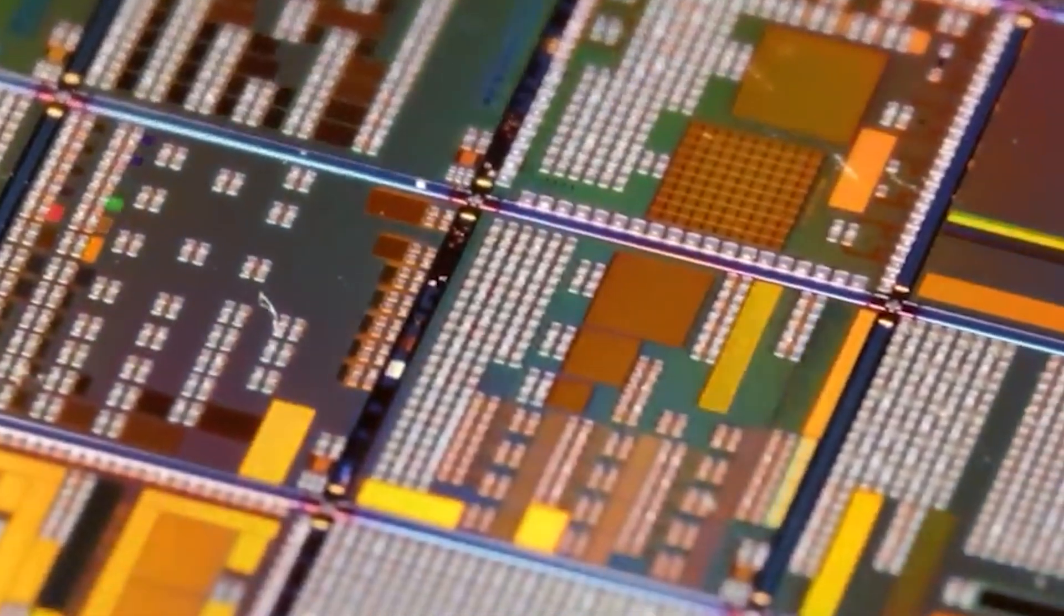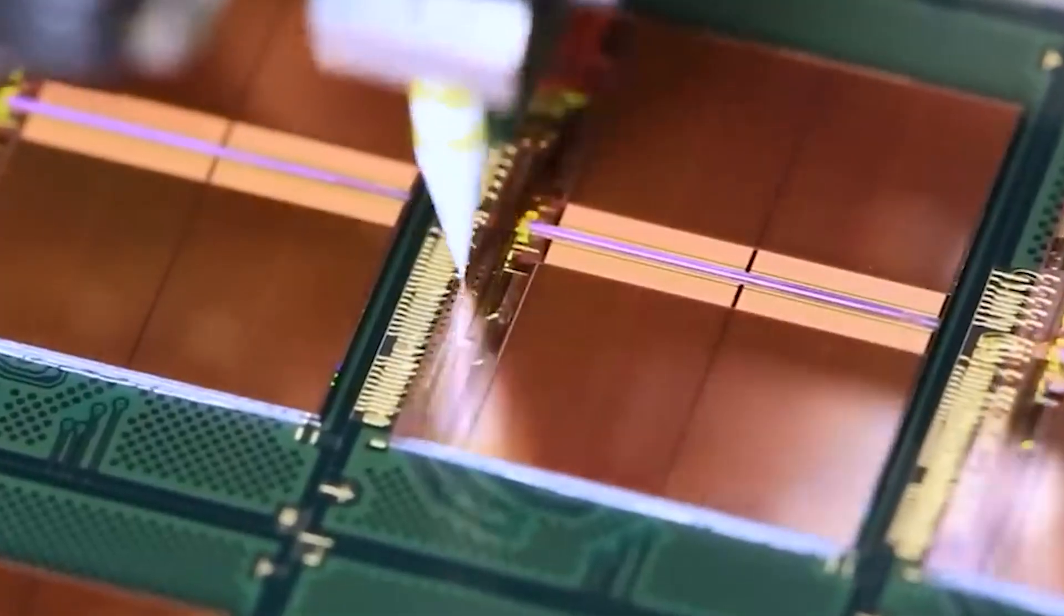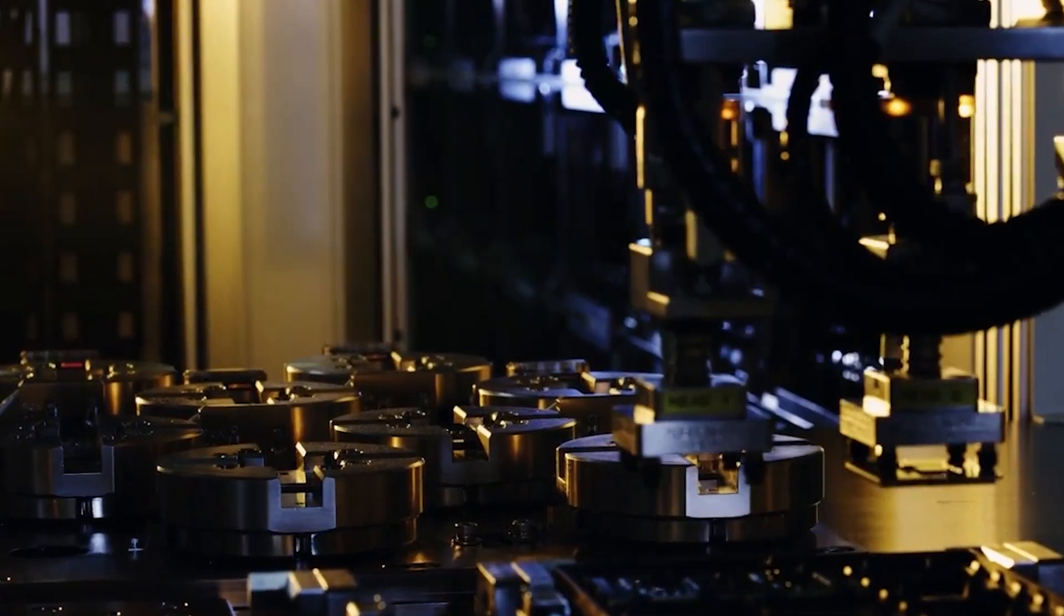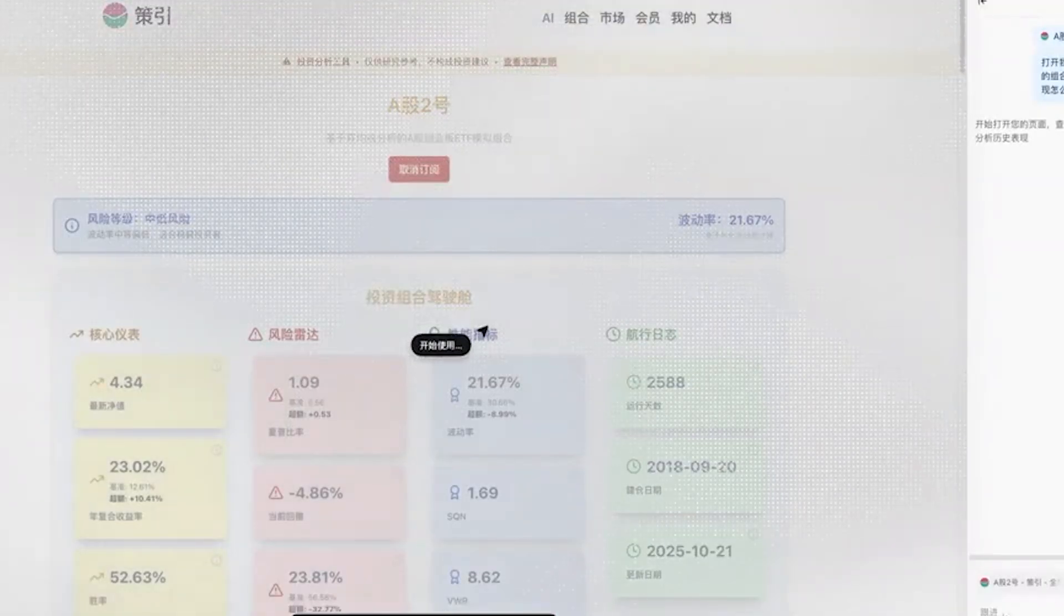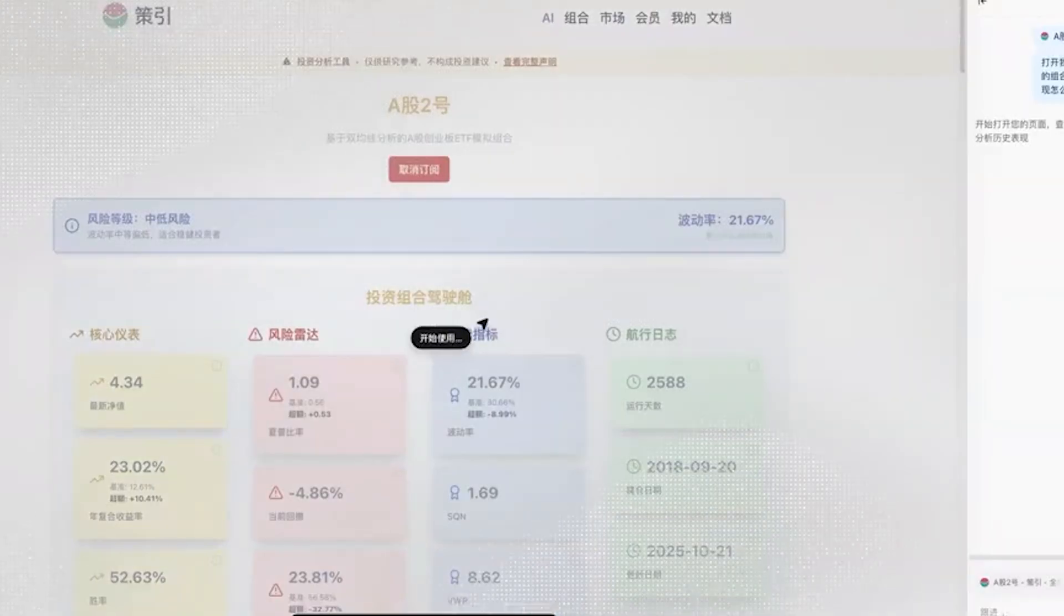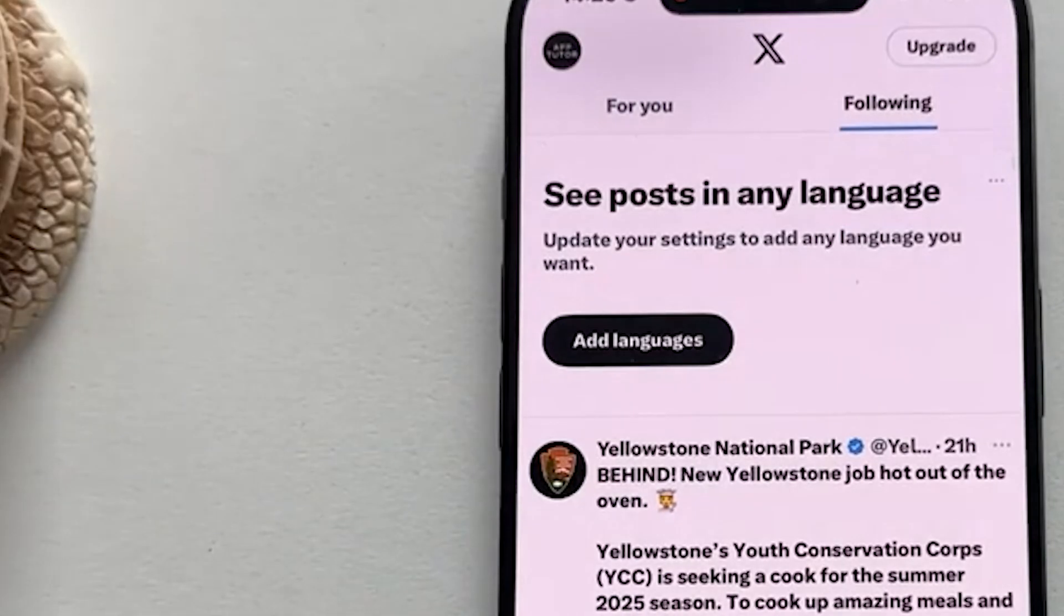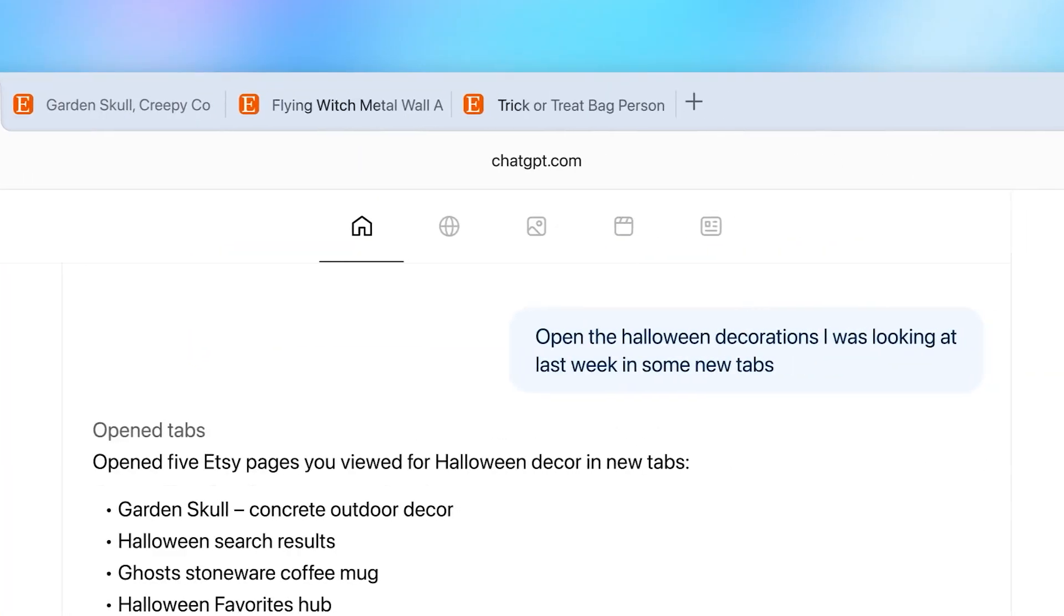Most dismissed this as typical over-optimism from someone known for ambitious timelines. But buried in the replies was another exchange that changed everything. When asked about a specific technical capability, Musk responded with something that made AI researchers around the globe stop in their tracks. He mentioned that their new system would feature dynamic reinforcement learning, allowing it to learn almost immediately, just like smart humans do. To those who understand the deepest challenges in artificial intelligence, it was nothing short of revolutionary.